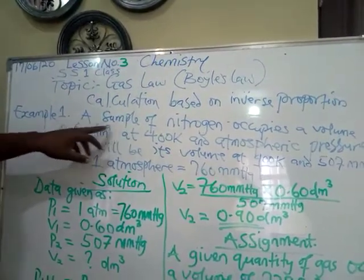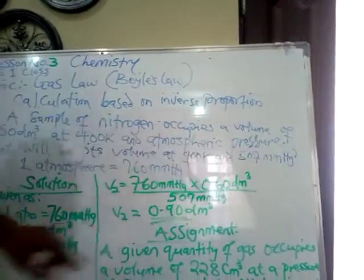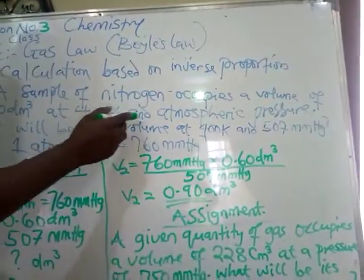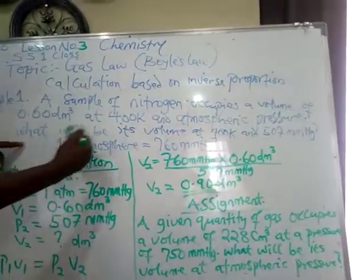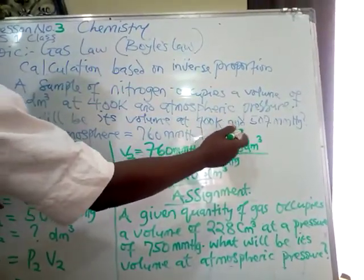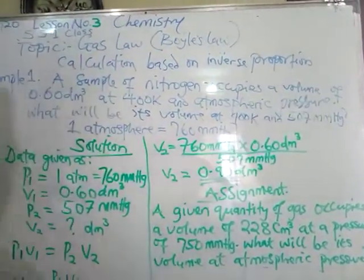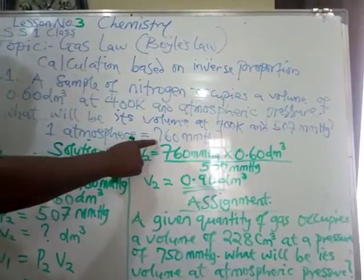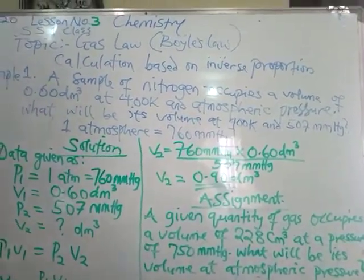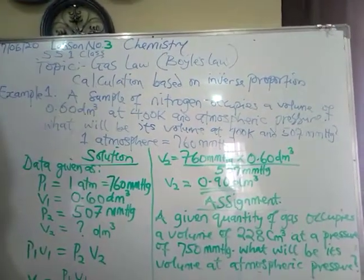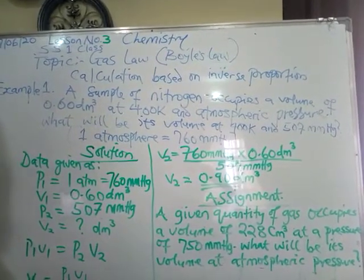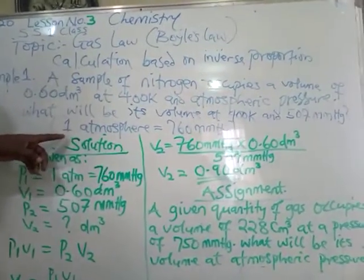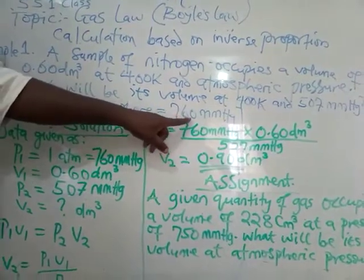Example one: A sample of nitrogen occupies a volume of 0.60 dm³ at 400 K and atmospheric pressure. What will be its volume at 400 K and 507 millimeter mercury? Take one atmosphere to be equal to 760 millimeter mercury. When I was explaining the behavior of gases, you have seen the SI units and the conversion of one value to another.